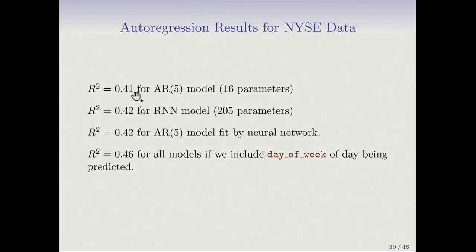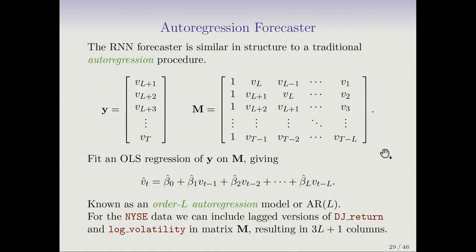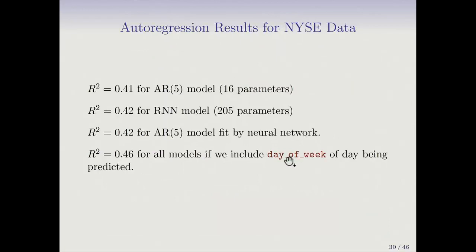For the AR(5) model, we get an R squared of 0.41 with 16 parameters — 3 times 5 plus 1. The RNN described earlier gets an R squared of 0.42, slightly better, but with 205 parameters — many more. This is a repeating story with neural networks: you can have many more parameters and not pay much in terms of overfitting, because of the way they're fit and regularized. You can also take this AR structure and instead of fitting a linear model, fit it through a feed-forward neural network, and when we did that we get the same performance as the RNN.